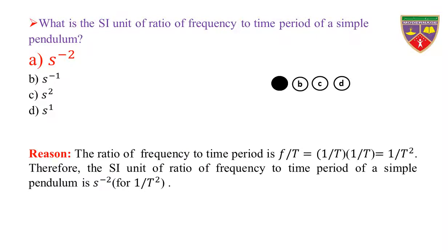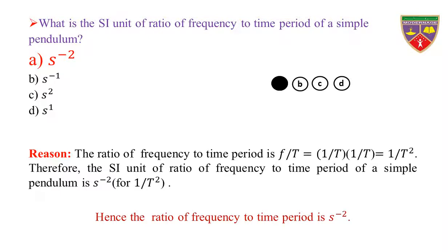Reason: the ratio of frequency to time period is F divided by T, which is equal to 1 over T into 1 over T, which is equal to 1 over T square. Therefore, the SI unit of ratio of frequency to time period of a simple pendulum is per second square.